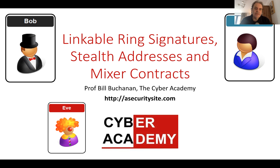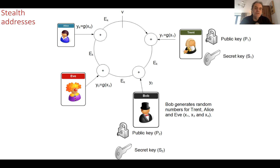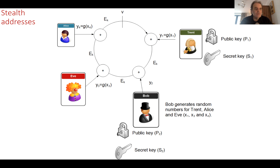Now let's look at linkable ring signatures. In ring signing, a number of parties get together with their public keys and sign a transaction such that it is known at least one entity within the signing process has signed for the transaction, but it is not possible to tell which one it actually is. Bob creates a ring signature by taking all the public keys of the other people in the ring and creates a trapdoor or secret key that allows him to sign the overall message.